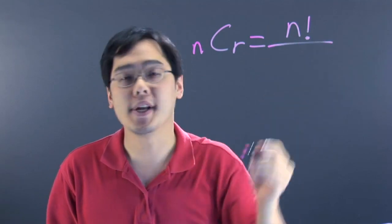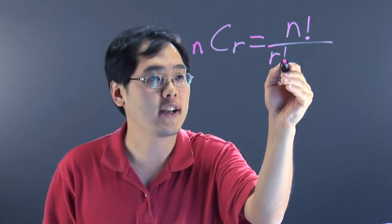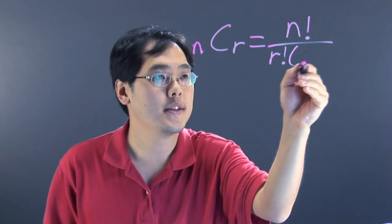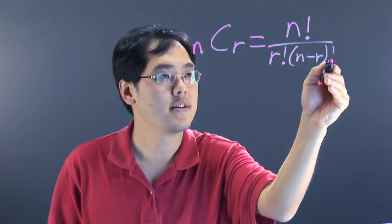But the denominator is actually a little bit loaded. The denominator is R factorial, and then in the denominator you have what's known as N minus R factorial.